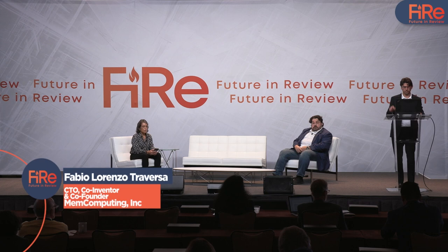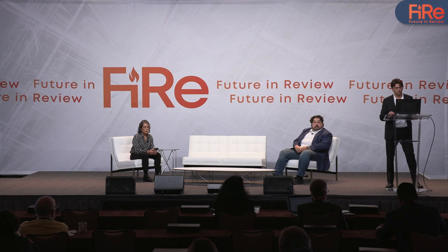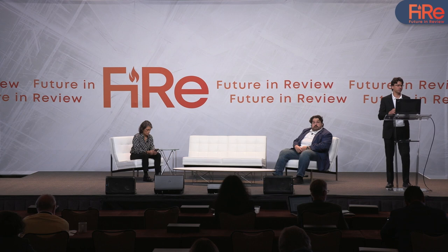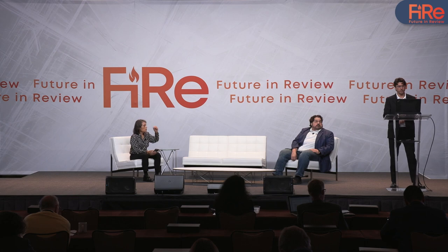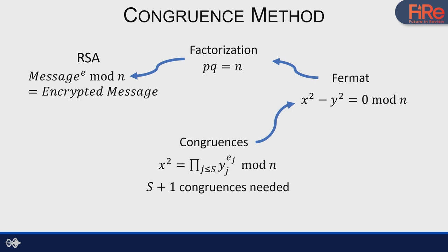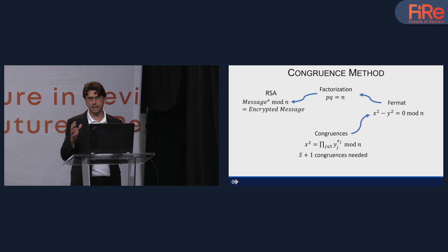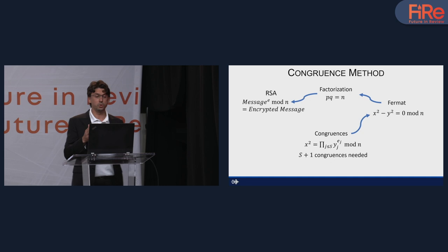I'll discuss a couple of slides very quickly, then enter into a demo. The problem is factorization. Most of you know encryption — one of the most-used methods is through asymmetric keys. You do mathematical processing on your message and a modulus number. To reverse this process and decrypt your message, you need to know the two factors that form this large number N, which is the public key. If you can break it into the two factors, you can decrypt the message.